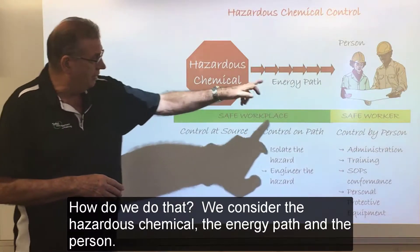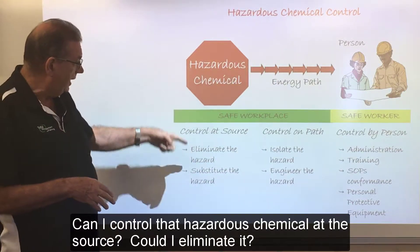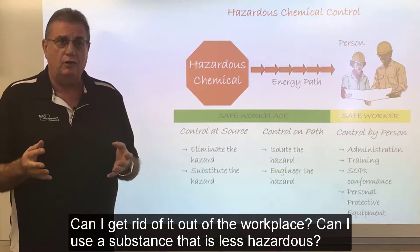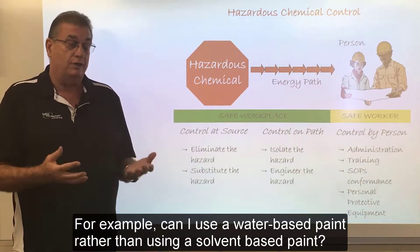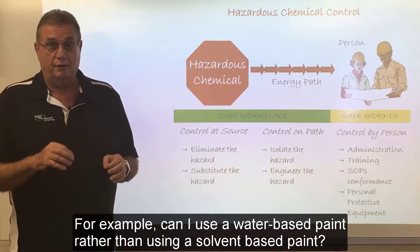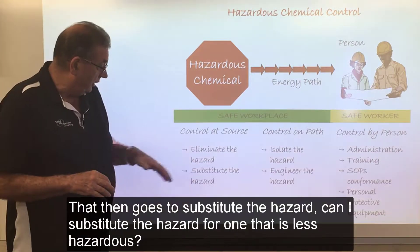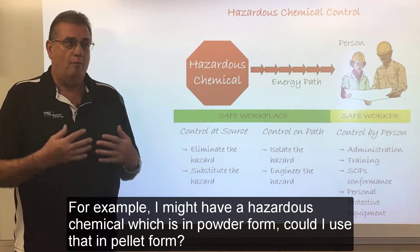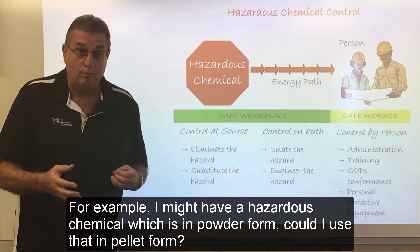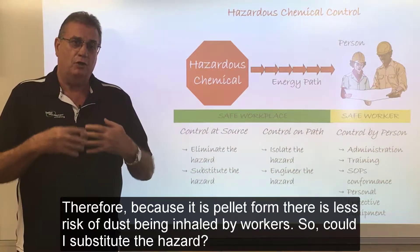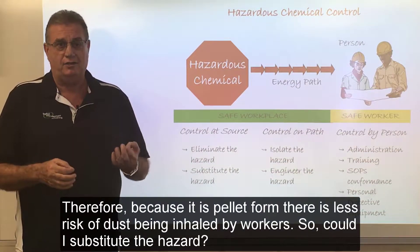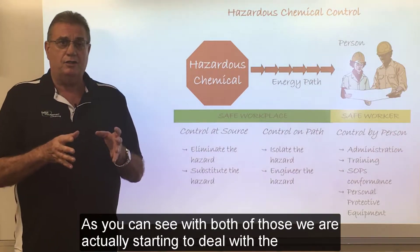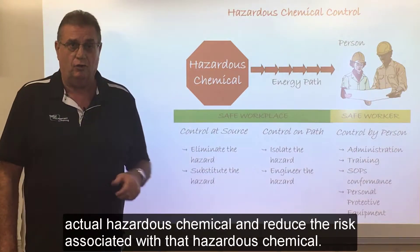We consider the hazardous chemical, the energy path, and the person. Can I control that hazardous chemical at the source? Could I eliminate it — can I get rid of it out of the workplace? Could I use a substance that is less hazardous? For example, can I use a water-based paint rather than a solvent-based paint? That is substituting the hazard. Could I substitute the hazard for one which is less hazardous? For example, if I have a hazardous chemical in powder form, could I use it in pellet form, so there is less risk of dust being inhaled by workers?